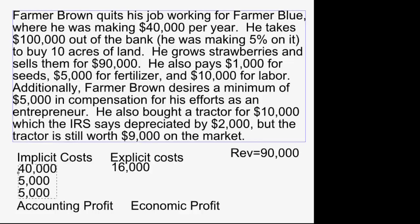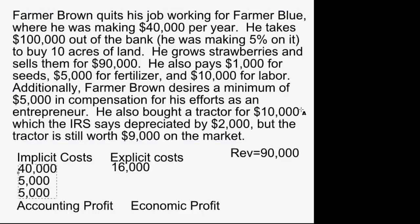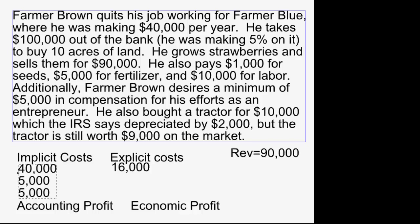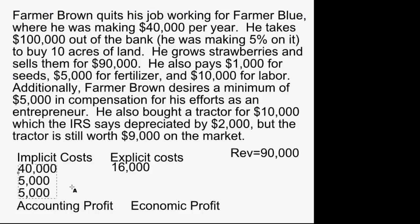He bought a tractor for $10,000 — just like the land, the whole purchase isn't a cost, only how much it's depreciating. There are two ways to view depreciation. One is what the IRS says — accounting depreciation — which is $2,000. Is that an implicit or explicit cost? The money isn't going from him to someone else right now; he already bought the tractor. Most people would say that $2,000 depreciation is an implicit cost.